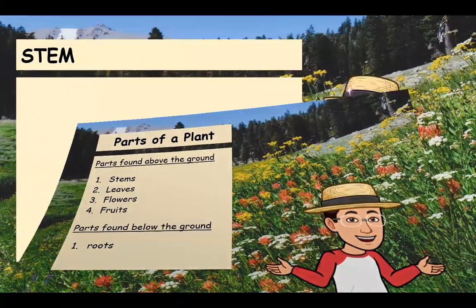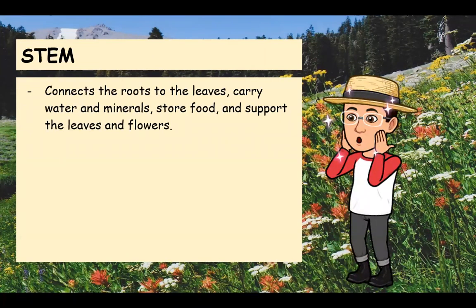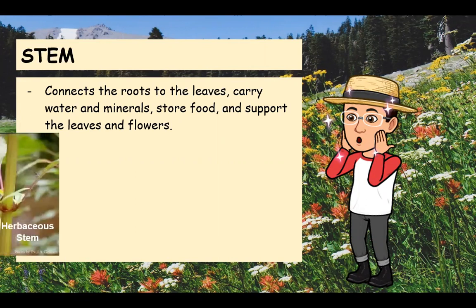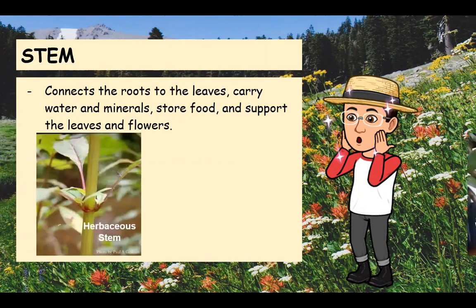Let's talk about the first one: stem. The stem is important in carrying food and water. It has tube-like cells — the xylem and phloem — that carry food and water continuously from the leaves through the stems to the roots. There are two types of stems: the woody stem, which is hard, strong, and tough, and the herbaceous stem, whose tissues are soft and easy to crush.